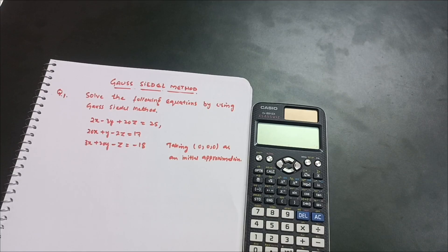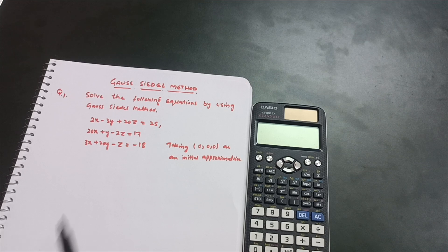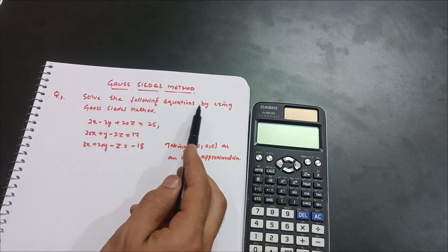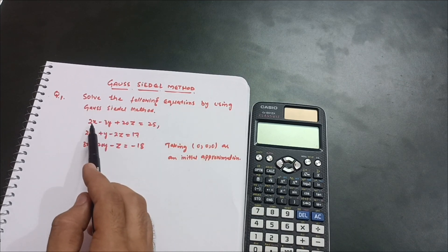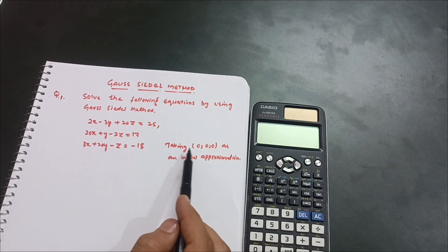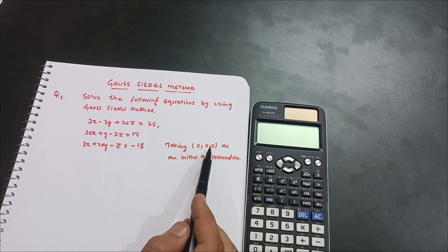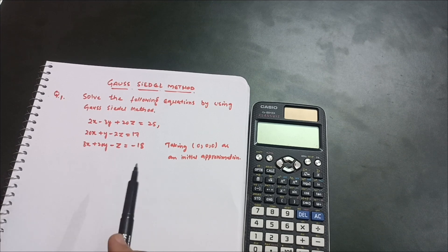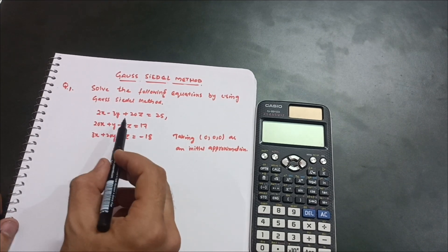Hello everyone, welcome back to my channel. Today I am covering another important topic: the Gauss-Seidel method, as far as mathematics in engineering is concerned. In the video examination this is a definite question — you have to solve some equations using the Gauss-Seidel method. The question says: solve the following equations using the Gauss-Seidel method, with initial conditions x = 0, y = 0, z = 0. You have to carry out some iterations. Let me explain in detail what we need to do with this method.